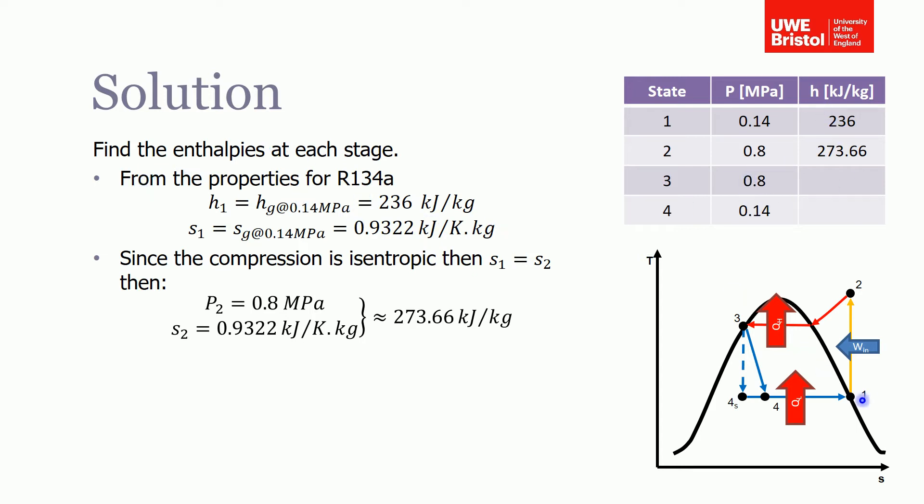For the enthalpy at state 1, that's fairly easy to find because we can read that directly off the table. We know the enthalpy at state 1 is equal to the enthalpy of the saturated vapor at that pressure. So we read that straight off, it's 236 kJ per kilogram.